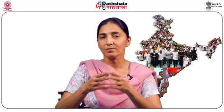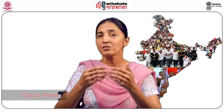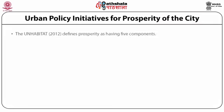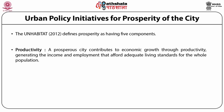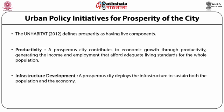Urban policy initiatives for prosperity of the city: prosperity implies success, wealth, thriving conditions, well-being, and opportunity. In any urban setting, a key question arises: what are the essential conditions and elements required for a city to thrive, or for an urban area to be described as prosperous? UN Habitat 2012 defines prosperity as having five components. The first is productivity: a prosperous city contributes to economic growth through productivity, generating income and employment that afford adequate living standards for the whole population. The second is infrastructure development: the prosperous city deploys the infrastructure, physical assets and amenities — adequate water, sanitation, power supply, road network, information and communication technology, etc. — required to sustain both the population and the economy.